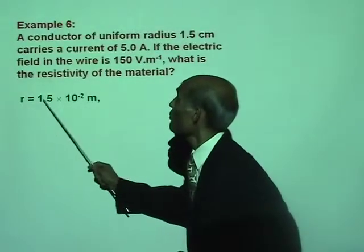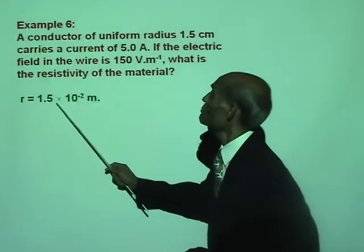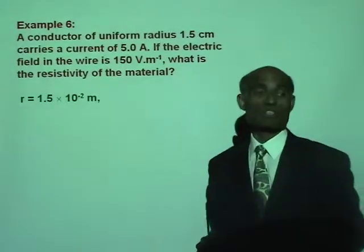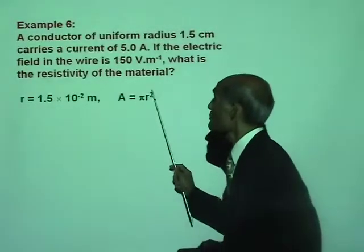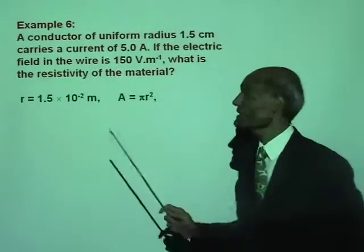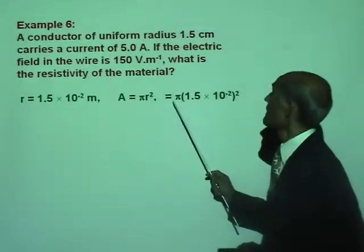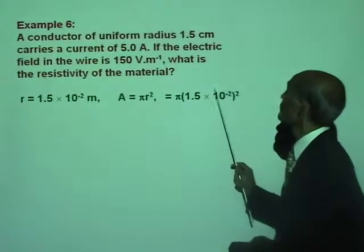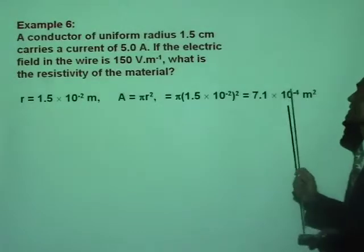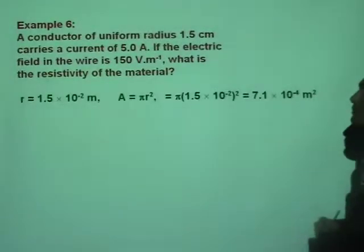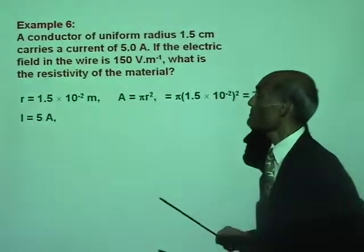The radius is 1.5 centimeter, which is 1.5 times 10 to the negative 2 meter. The area of cross-section of the wire is pi r squared. That will be pi times the radius squared, which gives us 7.1 times 10 to the negative 4 meter squared. The current is 5 ampere.